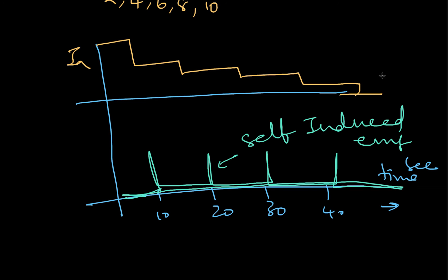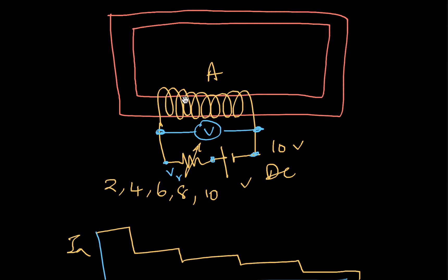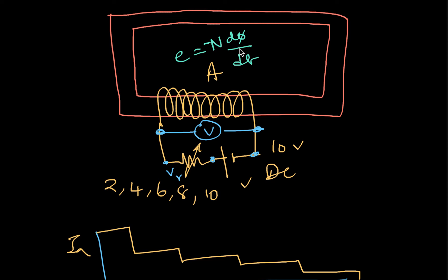This self-induced EMF arises because EMF = -N × dφ/dt. The negative sign indicates it opposes the very cause of its production. There is a dφ/dt because the current itself is changing — so whenever current changes, flux changes, and therefore self-induced EMF is produced.